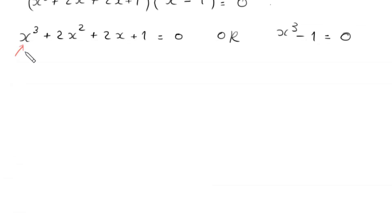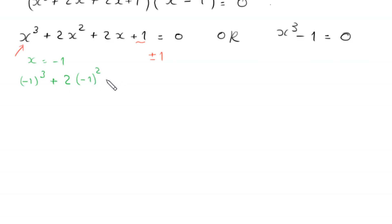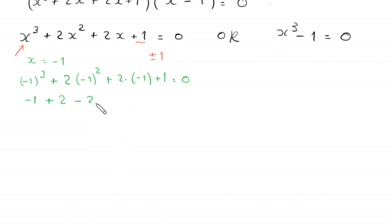Now first we solve this cubic equation. Factors of this one are plus or minus 1. If we put x equal to negative 1 in this equation, this will become negative 1 cubed plus 2 times negative 1 squared plus 2 times negative 1 plus 1 is equal to 0. So negative 1 cubed is negative 1, plus 2 times 1 is 2, plus 2 times negative 1 is negative 2, plus 1 is equal to 0. And this is equal to 0. It means that x equal to negative 1 is a root, so x plus 1 is a factor.